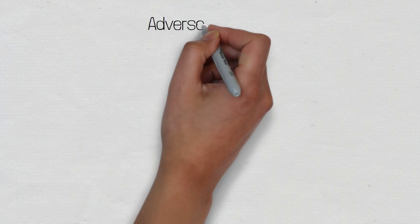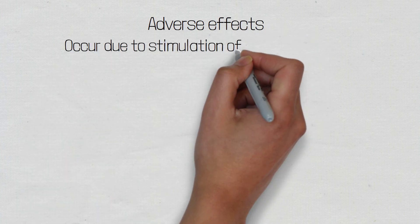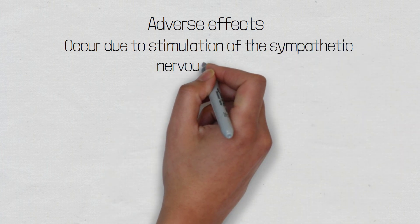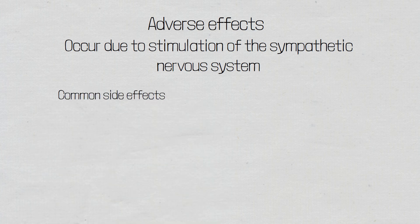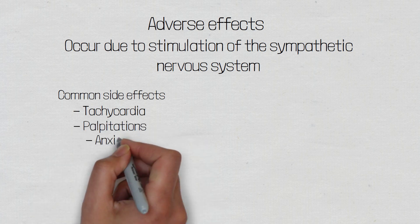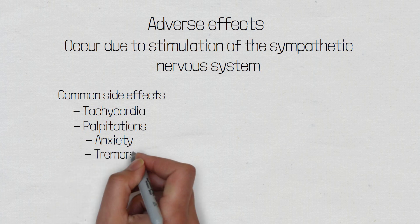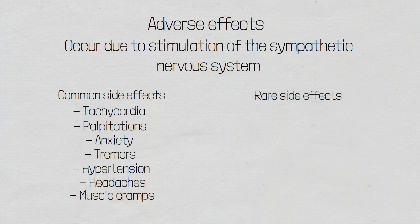The adverse effects of salbutamol result from its stimulation of the sympathetic nervous system. Common side effects include tachycardia, palpitations, anxiety, tremors, hypertension, headaches, and muscle cramps. Very rarely, salbutamol can also cause hyperglycemia, and as mentioned, excessive use can lead to hypokalemia.